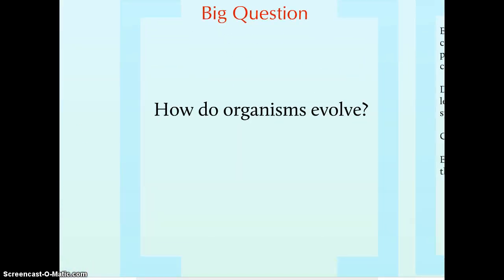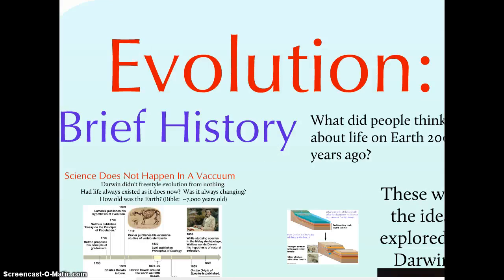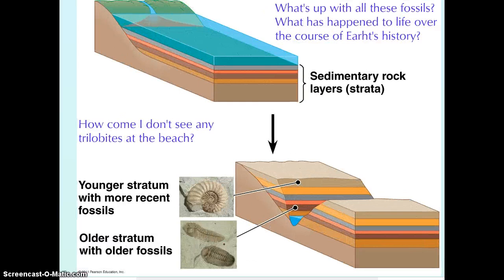What we're going to focus on is the big ideas related to how organisms evolve. An important component is looking at the historical context in which the discovery of evolution was made — what people were thinking about in the 1800s. One area that sparked interesting questions was what you see coming from the earth: fossils of organisms and how to place them in the context of natural history. At the time, the prevailing thought was that the earth was relatively young and that species were fixed and unchanging, a perspective dictated by interpretations of the Bible.